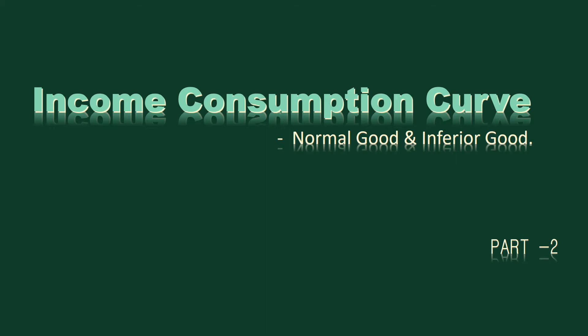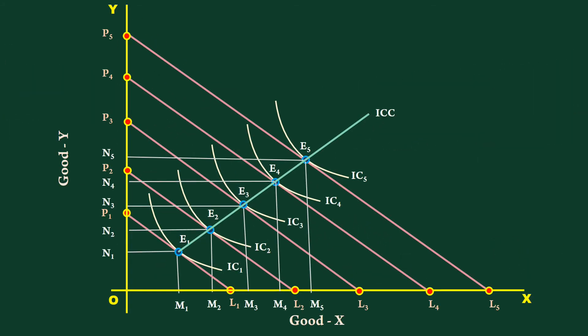Yes, normally the income consumption curve slopes upwards. When the two goods are normal goods, the income consumption curve will slope upwards.